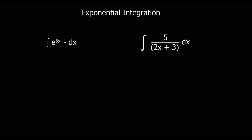Here are some questions. They are using the reverse chain rule — or use substitution if you prefer that method. I'm going to do the reverse chain rule because it's quicker. We've got the integral of e to the power of 5x plus 1 with respect to x. We can think of 5x plus 1 as our bracket.